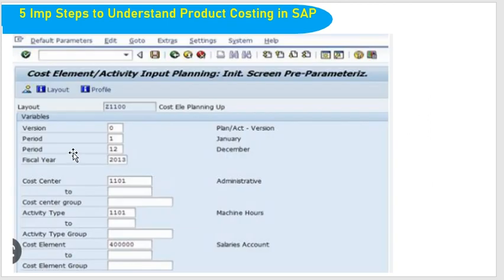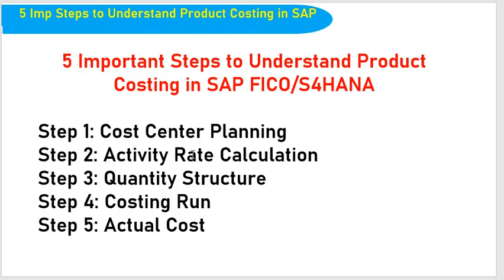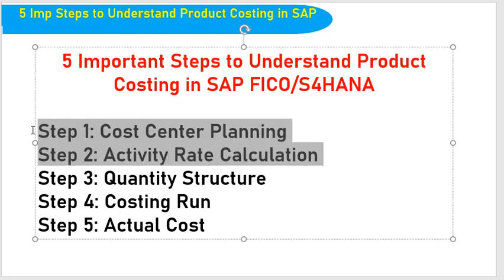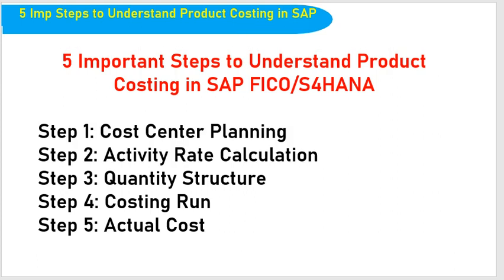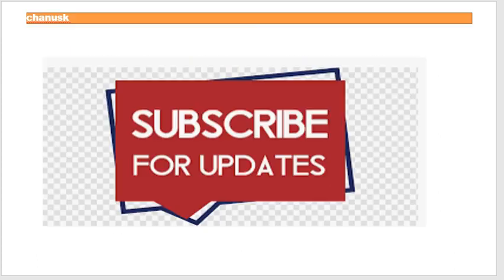Here I have shown a screen with the activity type — machine hours — what cost center you are planning for, such as administrative cost, and what cost element you are taking. You can plan multiple cost elements, not just one. We need to plan both costing plan and activity price rates, and we do this through KP06 and KP26. These two T-codes are very important to calculate standard costing and understand product costing in detail.